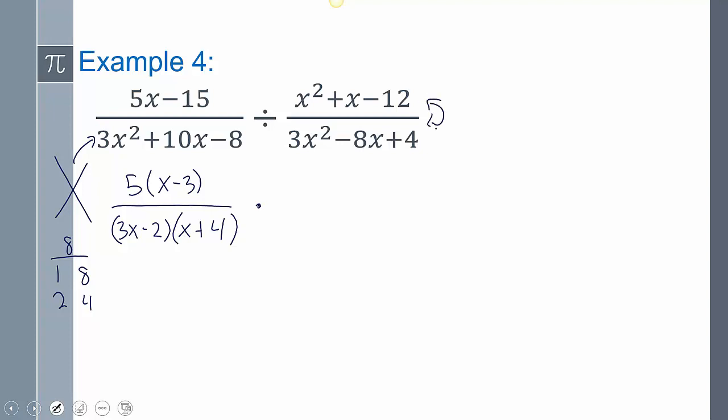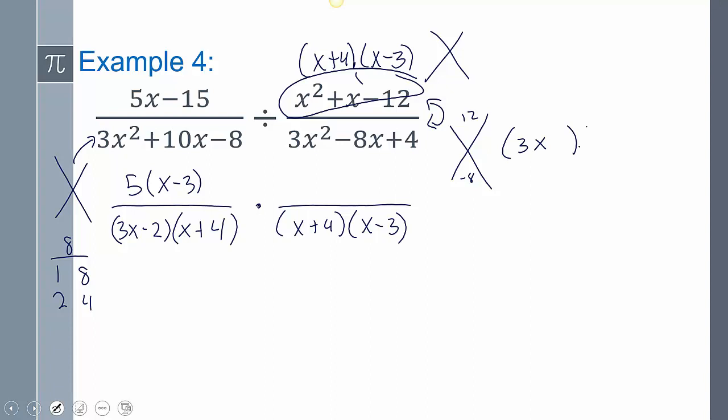And so remember, we have to flip these. And so flipping this, I'll factor this one. So that's going to be x plus 4 times x minus 3. So it's on the bottom. So this one right here, that's x plus 4 times x minus 3 if you do the xbox method. And for this one, we also have to do the xbox method.